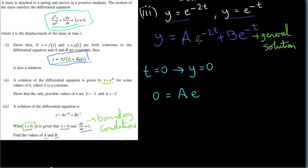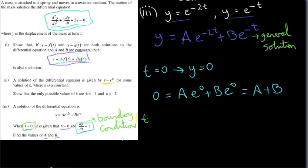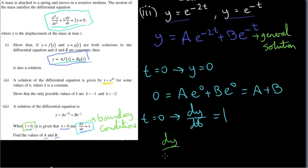When t = 0, we get y = 0. We take our general solution, replace y with 0, and replace t with 0: a·e^(-2×0) + b·e^(-0) = a·e^0 + b·e^0 = a + b, since e^0 = 1. So we have 0 = a + b. That's one piece of information. Another piece is that when t = 0, dy/dt = 1.